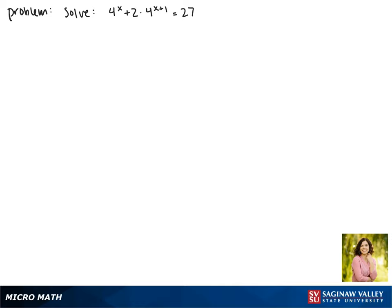Today we'll be solving the equation 4 to the x plus 2 times 4 to the x plus 1 equals 27.